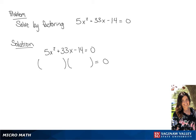The first term in each of our binomials is going to be x and 5x. We want to factor the negative 14.